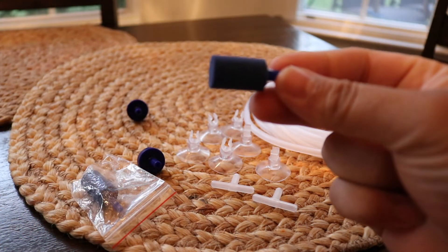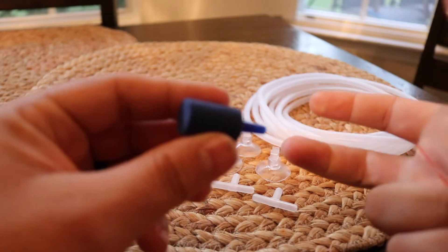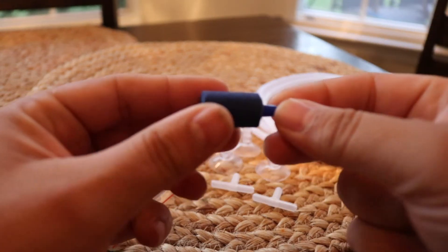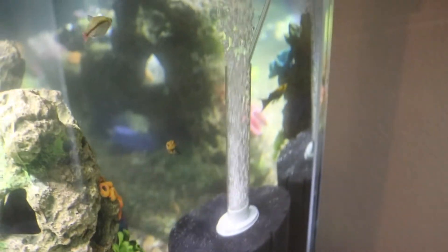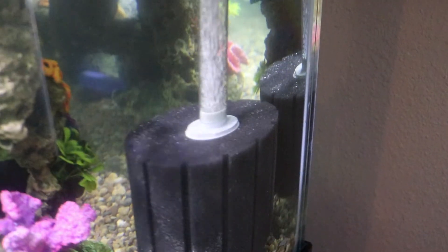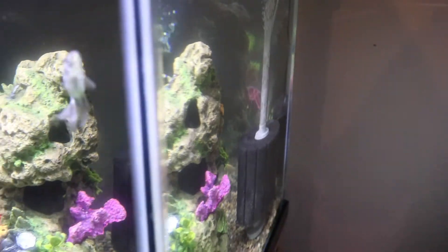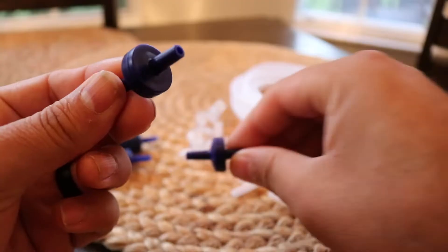What they do is they break the bubbles. Sometimes you have really big bubbles, and sometimes you just want to have little ones. Bigger ones aren't necessarily the best. These air stones break the bubbles down. You attach it right here to the line and it's going to push those smaller bubbles. You have two of them.